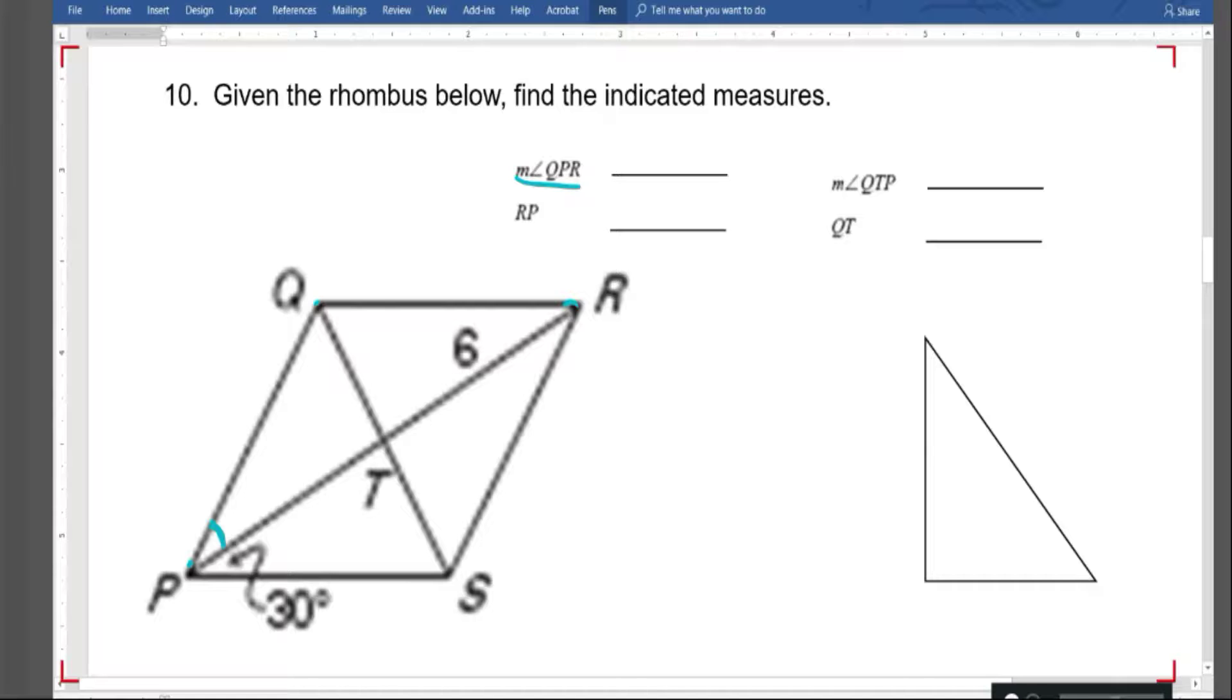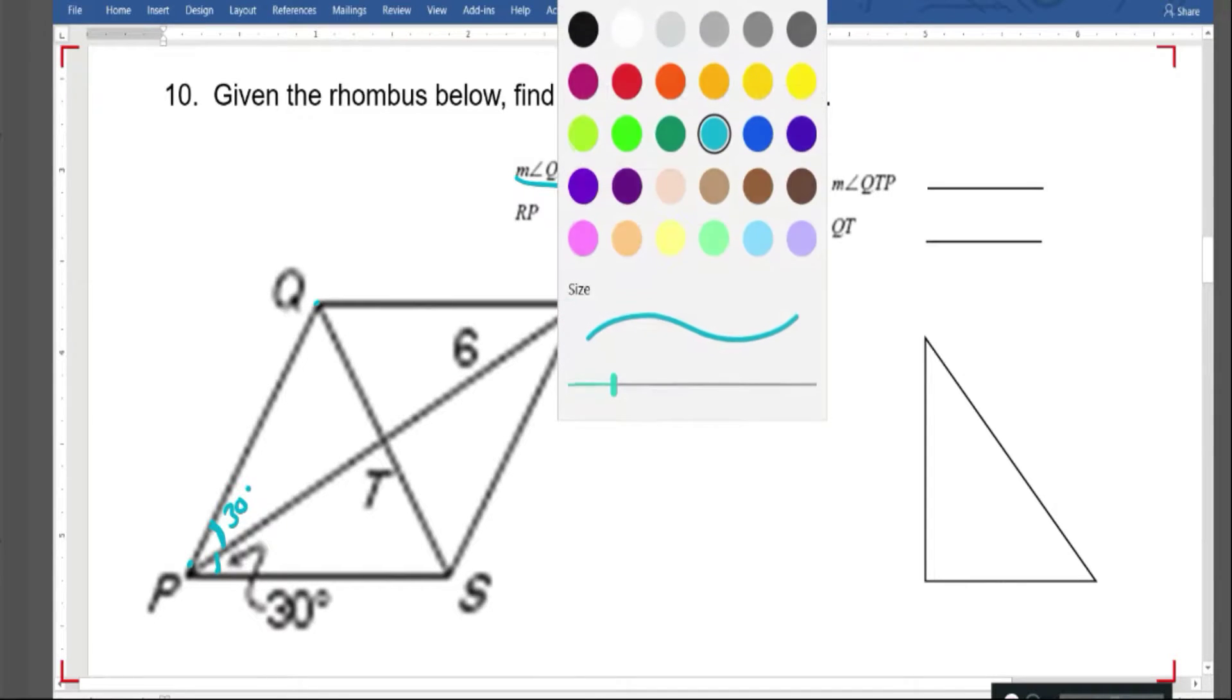One of the properties of a rhombus is that the diagonals bisect the angles. So if this one over here is 30, this one has to be 30. So I'm gonna go ahead and write 30 degrees in there.